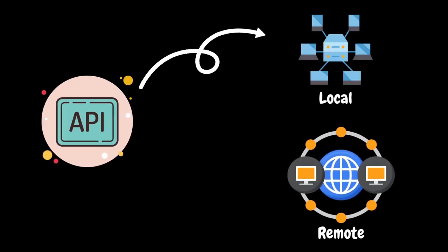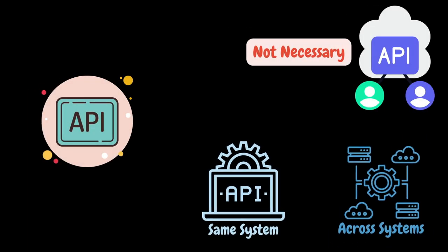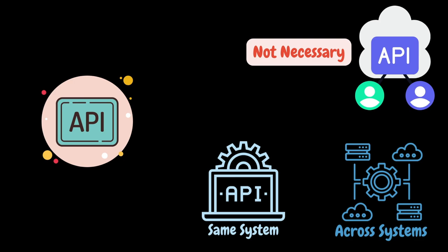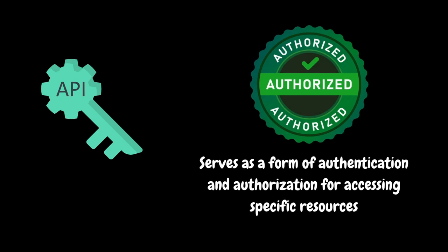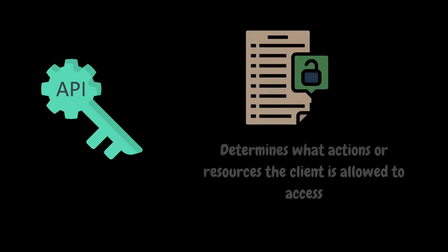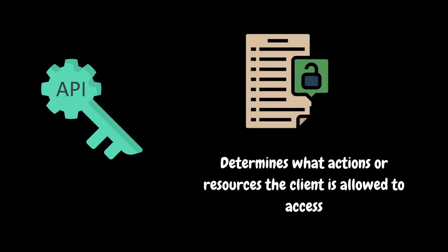APIs can be local, remote, or a combination of both. They are not necessarily web-based and can function within the same system or across different systems. Now let's understand another important concept: the API key. An API key is a unique string of characters that serves as a form of authentication and authorization for accessing specific functionalities or resources within an API. API keys are commonly used in web and mobile application development to control access and ensure that only authorized users or applications can interact with the provided services. API keys are often associated with specific access permissions, determining what actions or resources the client is allowed to access, helping implement fine-grained access control.